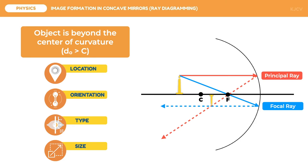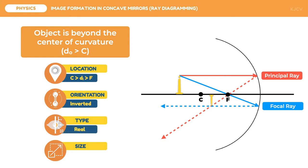The three rays intersect, and this intersection is the point at which the tip of the object's image is formed. The base always touches the principal axis. For an object placed beyond the center of curvature, the image will be between C and F — the image distance is greater than F but less than C. The image is inverted and, since the rays intersected in front of the mirror, the image is real. The image is also reduced — smaller than the object.